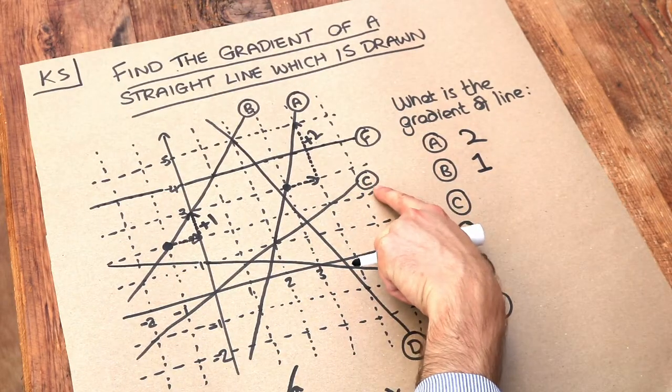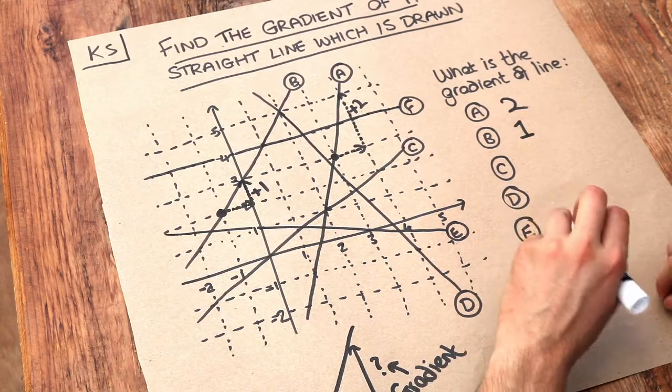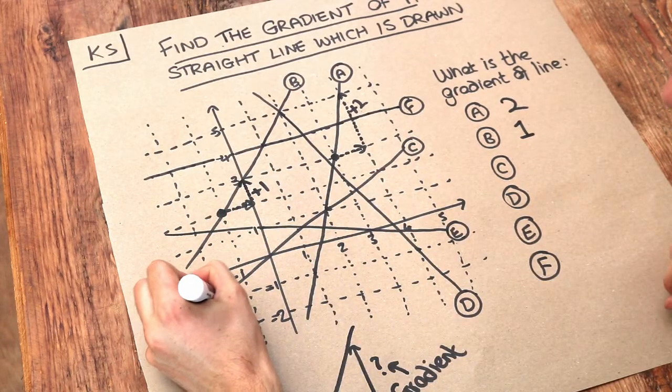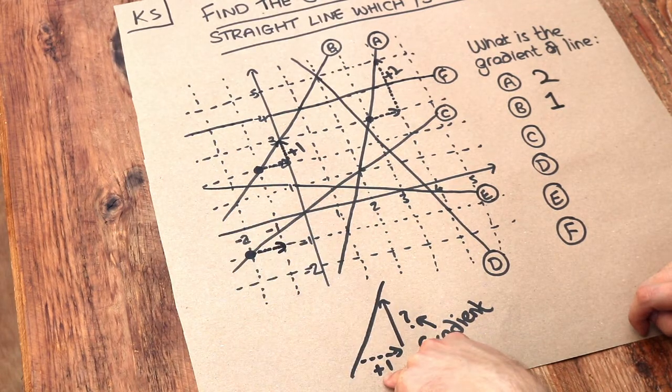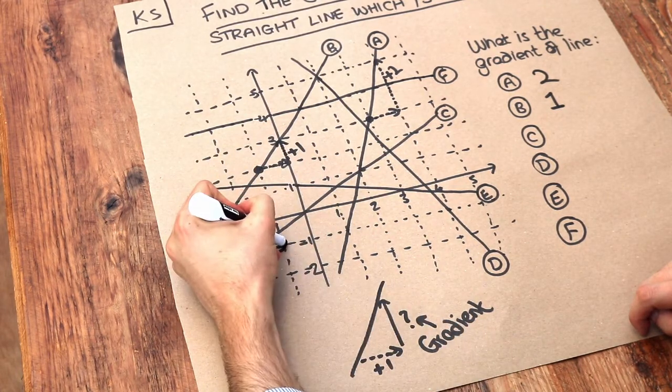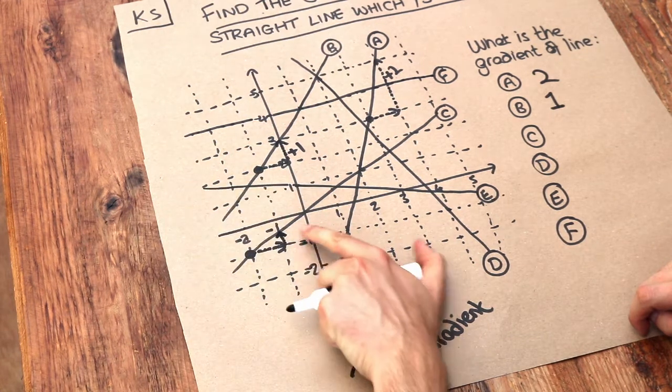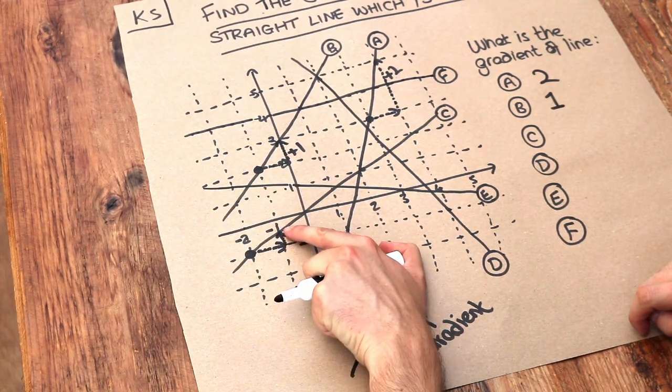What about C? Let's start on an integer coordinate. So let's say we started here, and as x increases by one, what's the y value going up by? Well can you see this is not a whole square, it's less than a whole square.